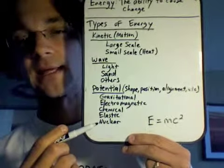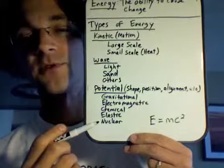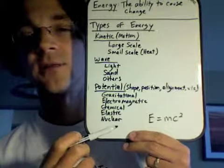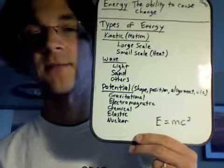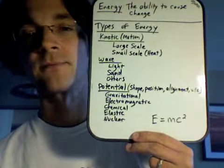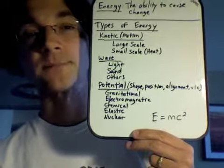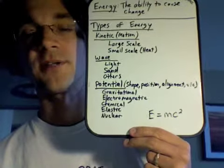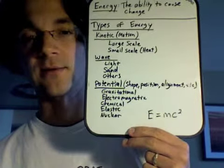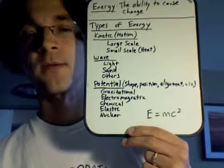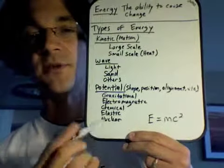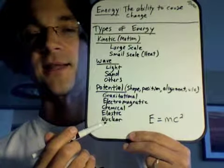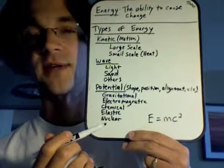In a nuclear power plant, where people use uranium or plutonium to create electricity, they're exploiting the nuclear energy present in that uranium and plutonium. In a nuclear bomb, nuclear energy is released in a terrible way to kill and destroy. It's actually the energy stored in matter that's being released to create heat, light, and all sorts of other kinds of energy.